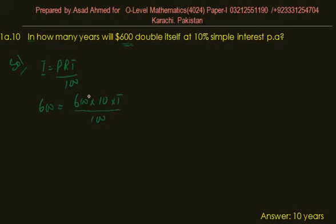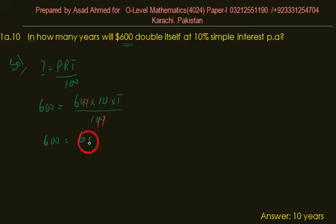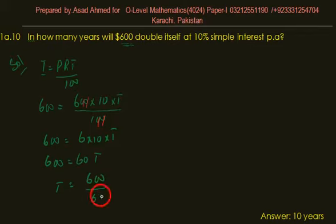Now we simplify: the two zeros cancel, and this becomes 600 = 6 × 10 × t, so 600 = 60t, which gives t = 600 / 60. Therefore t = 10.